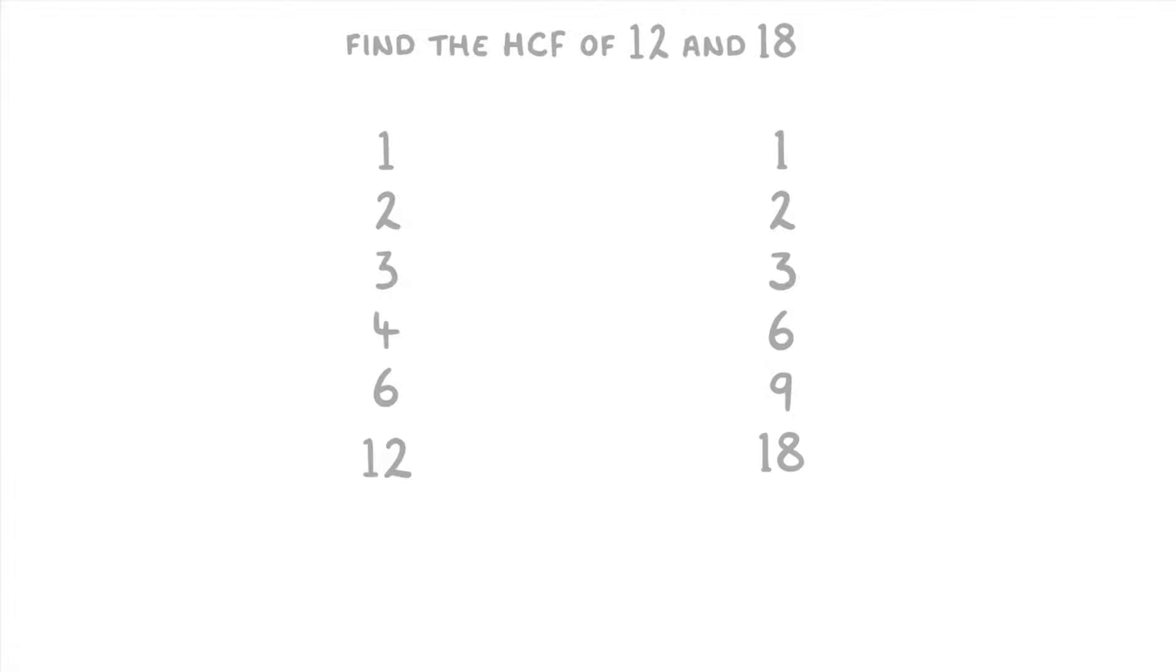Then we just look for the biggest number that occurs in both lists. So, that's going to mean 6 is the highest common factor. And that's all you have to do to find the highest common factor of a pair of numbers.